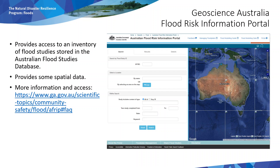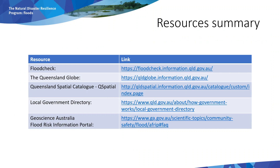Geosciences Australia also has a flood risk portal that provides access to various information about floods and what sort of data is available for your area of interest and how you can access it. This resource may be useful if you need information on areas outside of Queensland. These are just some of the resources that are freely available and are a starting point for how mapping can help with flood resilience planning. Thank you for your attention.